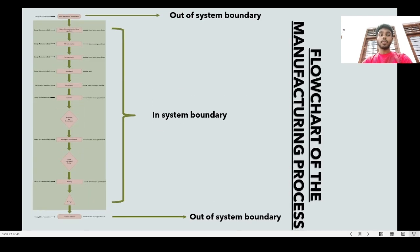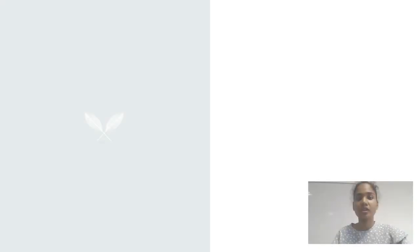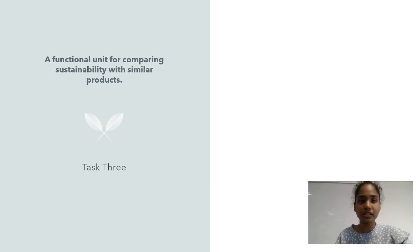In the flowchart of the yogurt production process, the first step — collecting milk and transportation — and the last step — transportation to users — are outside system boundaries; all other steps are within system boundaries. That's the end of the manufacturing process. I'm Dhamipa Badarachi and I'll be explaining Task 3: the functional unit for comparing sustainability with similar products.